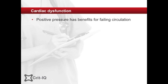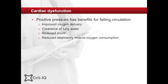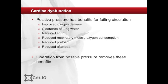Positive pressure ventilation has well-known benefits on cardiac function, and this is reflected in the beneficial effects of non-invasive ventilation in patients with cardiogenic pulmonary oedema. Non-invasive ventilation can improve oxygen delivery to the myocardium, improve cardiac performance, and may have a positive effect on clearing lung water. It can also reduce shunt and reduce oxygen consumption by the respiratory muscles. In addition, positive pressure reduces preload by reducing venous return and also reduces afterload by increasing the pressure gradient down which blood will flow to the body. Both of these effects have a positive effect on cardiac function. Liberating patients from positive pressure ventilation may therefore unmask borderline left ventricular dysfunction, as these beneficial effects are removed.